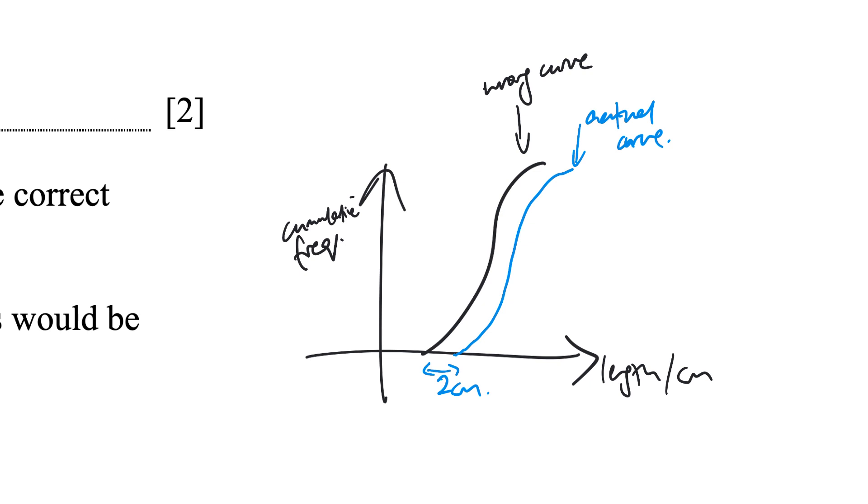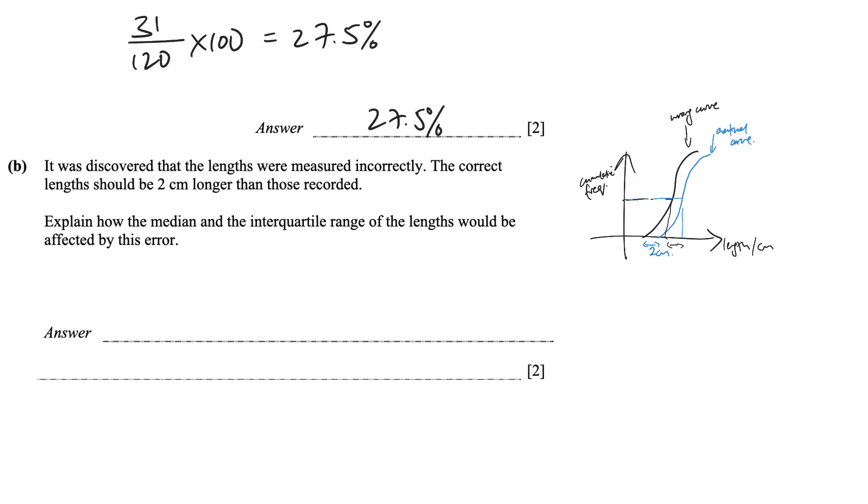And so how does that affect the median? So your actual median should be here. But your median that you managed to calculate is actually also 2 cm less. Because everyone moved 2 cm less.